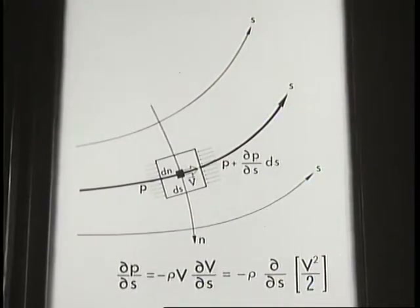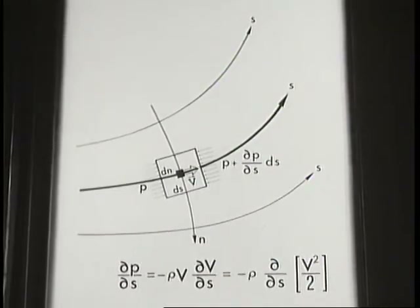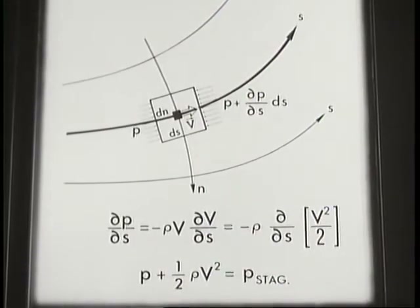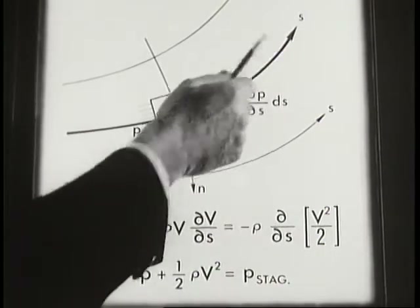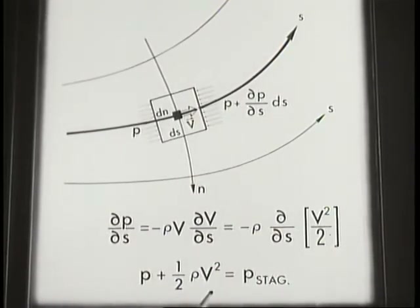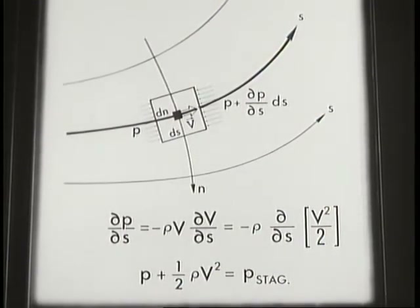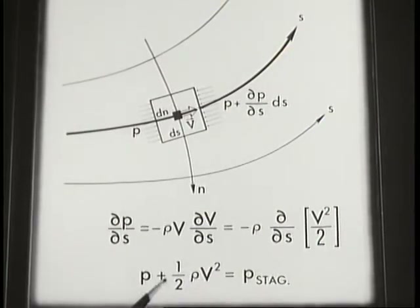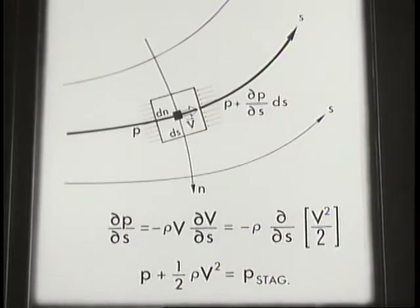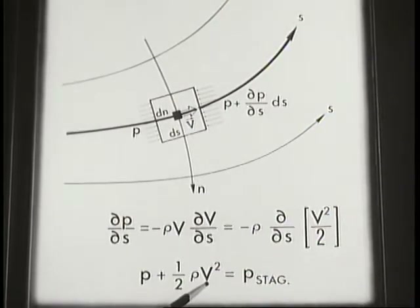In an incompressible, steady, non-viscous flow, Euler's equation has a special integral called Bernoulli's integral. Along each streamline the sum of the static pressure and the dynamic pressure is a constant. This sum is called the stagnation pressure. On any streamline where the velocity is high the pressure is low and vice versa. The highest possible pressure, the stagnation pressure, occurs where the velocity is zero.